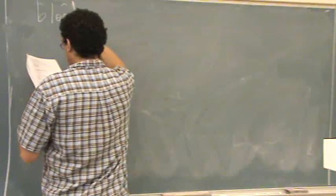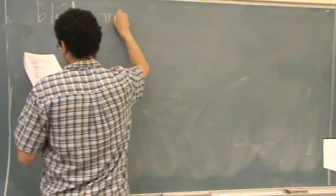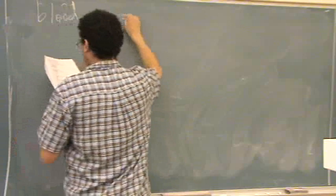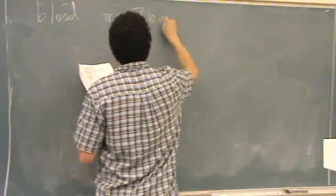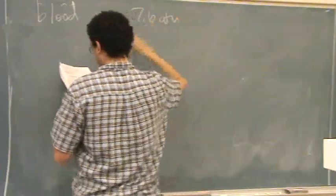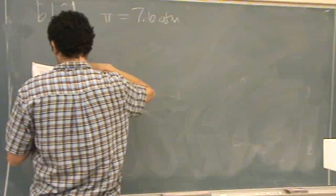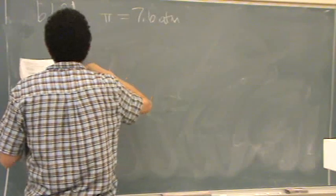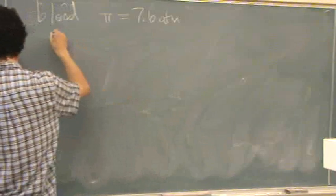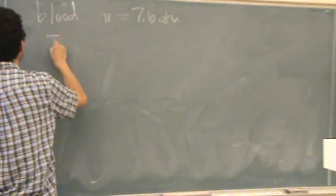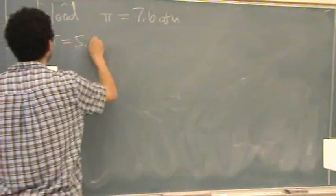The problem states that blood has an osmotic pressure of 7.6 atmospheres. Somebody is donating blood that has to be refrigerated, and it gives you the temperature of that donated blood.